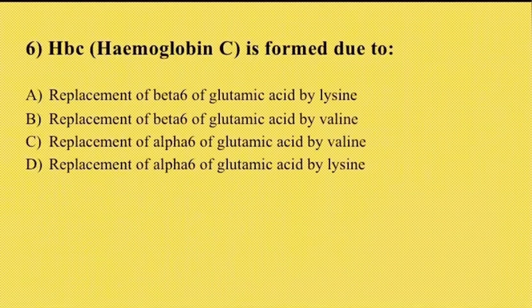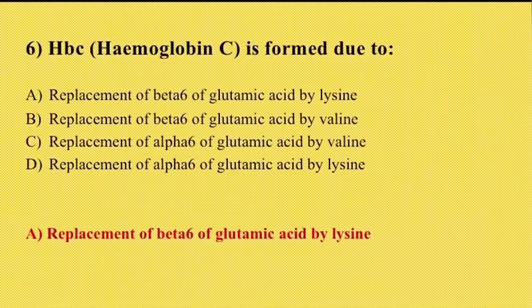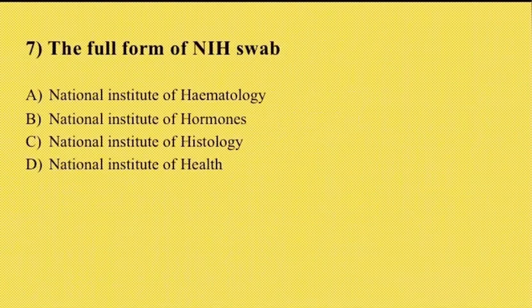Sixth question: HbC is formed due to option A replacement of beta-6 glutamic acid by lysine, option B replacement of beta-6 glutamic acid by valine, option C replacement of alpha-6 glutamic acid by valine, option D replacement of alpha-6 glutamic acid by lysine. Correct answer is option A, replacement of beta-6 glutamic acid by lysine. In sickle cell disease, it is due to replacement of beta-6 glutamic acid by valine.